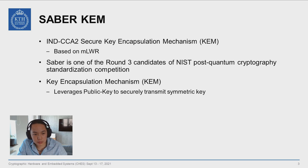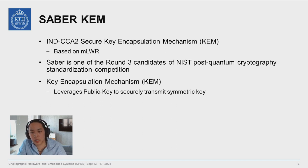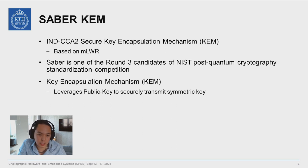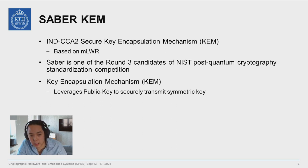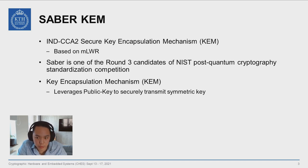SABER is a key encapsulation mechanism, which leverages public key cryptography to securely transmit a shared secret, such as an ephemeral symmetric key, which is then later used for bulk encryption. It is one of the finalists in the NIST post-quantum standardization competition, which is one of the reasons why we selected it for the evaluation.